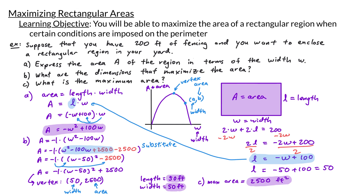You might notice that what we did here is very similar to our revenue problems. We started with area depending on two variables L and W, made a substitution to rewrite the area just in terms of W, and it turned out the area is a quadratic function. We can then maximize this quadratic by finding the vertex. Let's take a look at another example.